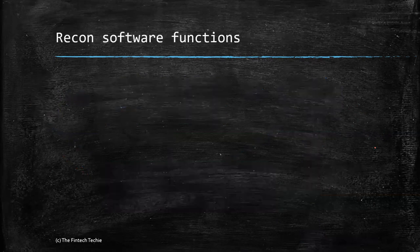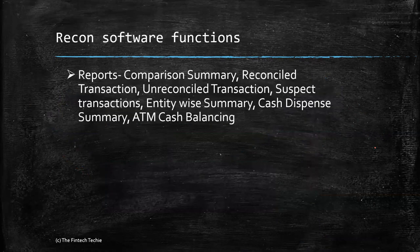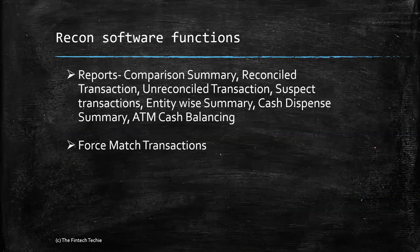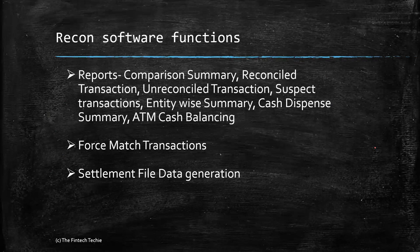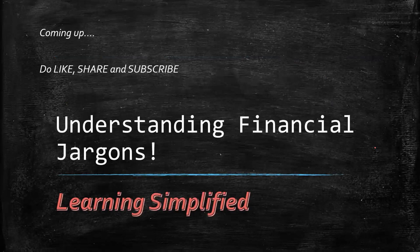Key functions of reconciliation software include creating lots of reports — a comparison summary showing what is reconciled, what is unreconciled, suspect transactions, ATM cash balancing, and so on. It also does force-match transactions in case you manually want to force-match. And it creates a settlement file that is sent to the core banking system for processing. Hope this gave you a very clear idea as to how ATM switch reconciliation works. Thank you.